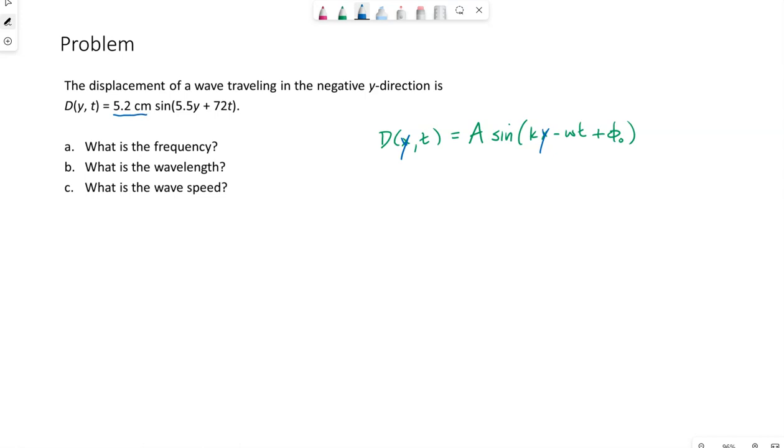The number here, this 5.2 centimeters out in front of the sine, represents the amplitude. So whatever type of wave this is, any piece of the medium is moving a maximum distance from equilibrium of 5.2 centimeters.